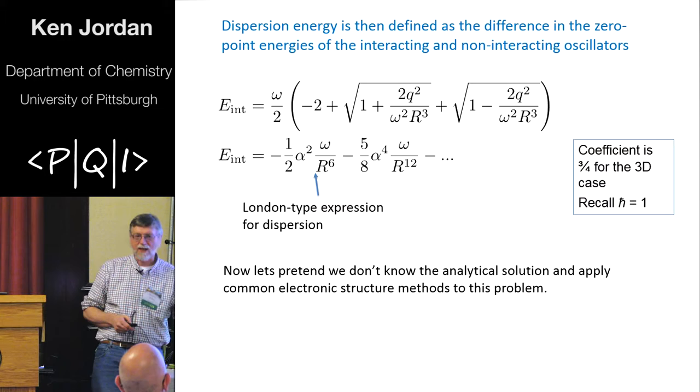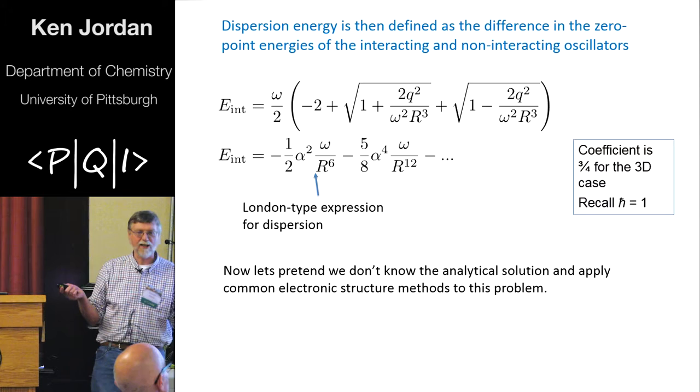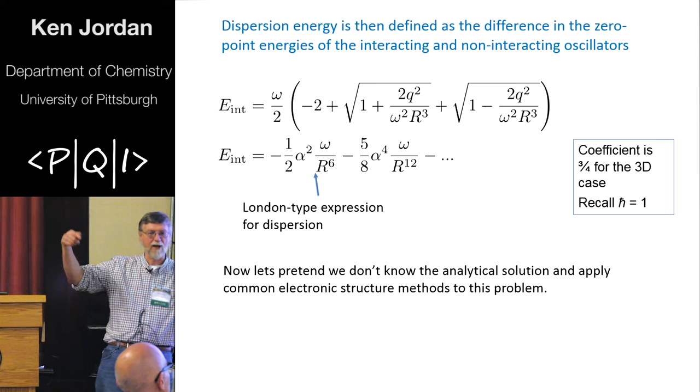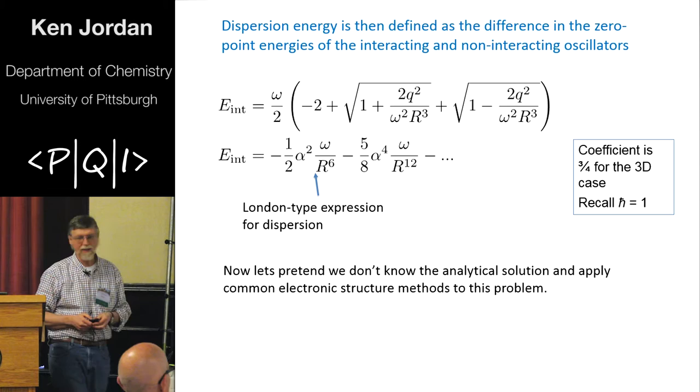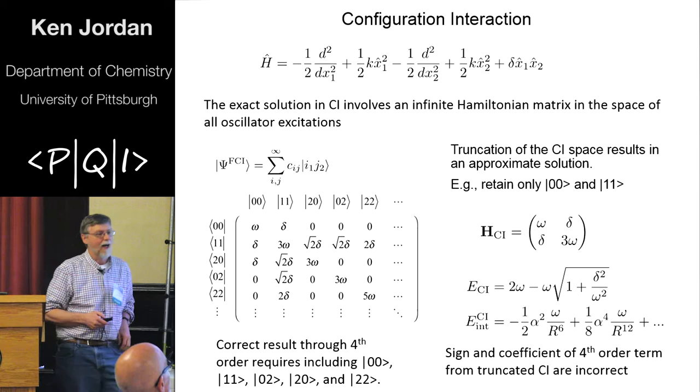So I'm not going to go into this detail because I talked about this part last year. You can pretend you don't know the solution to this and use standard quantum chemistry methods. So you can introduce a basis set, which are going to be the harmonic oscillator functions. You can do configuration interaction, RPA, coupled cluster, or any of your other favorite methods.